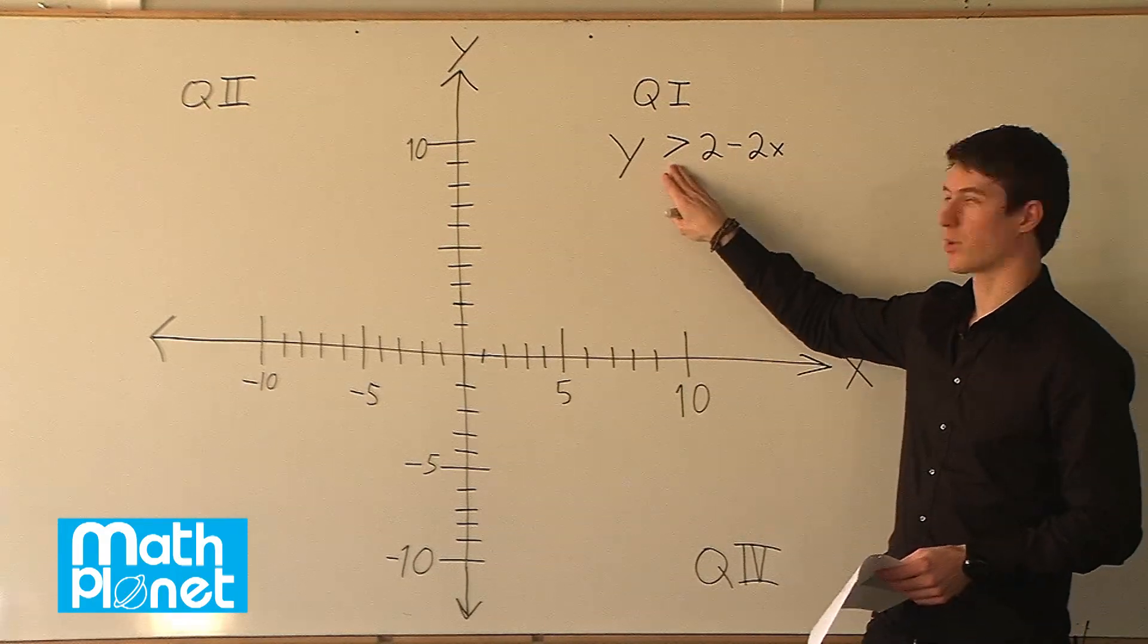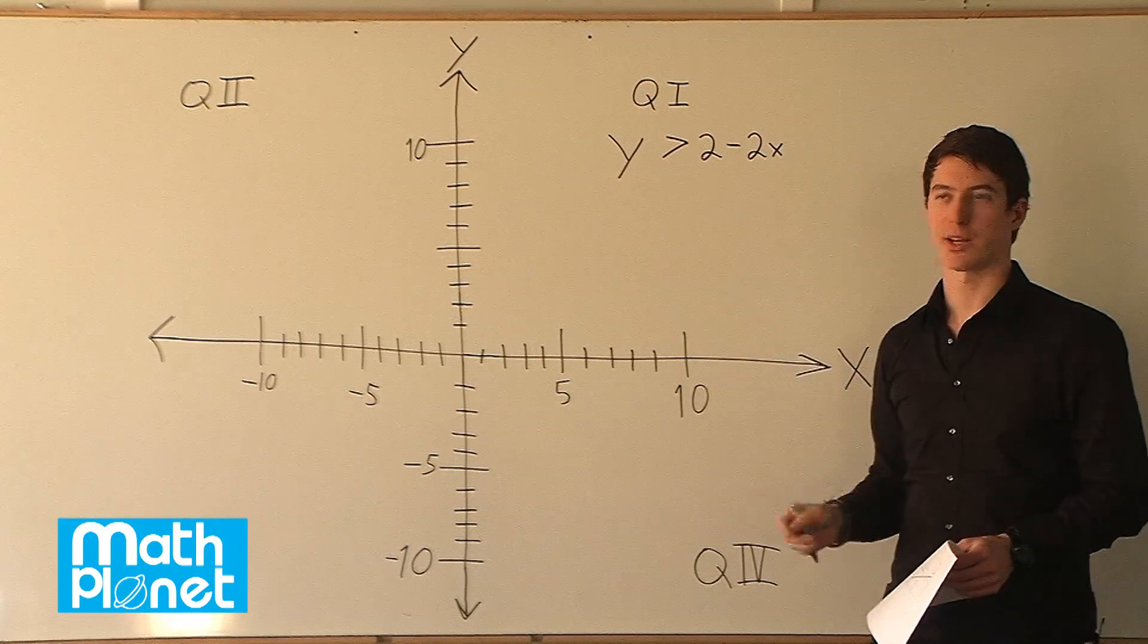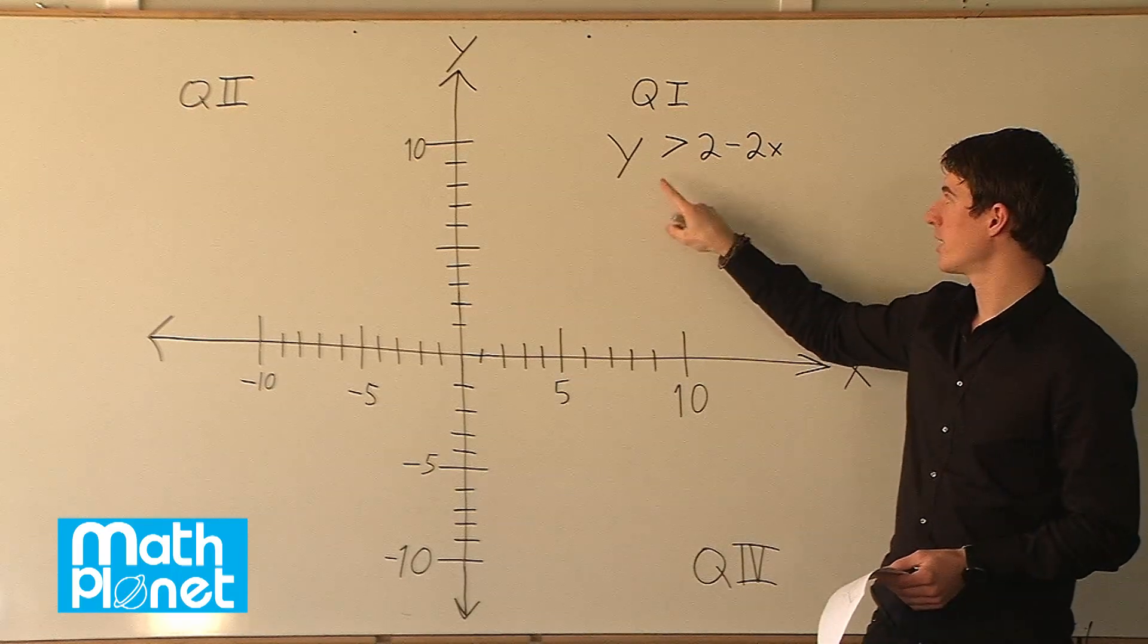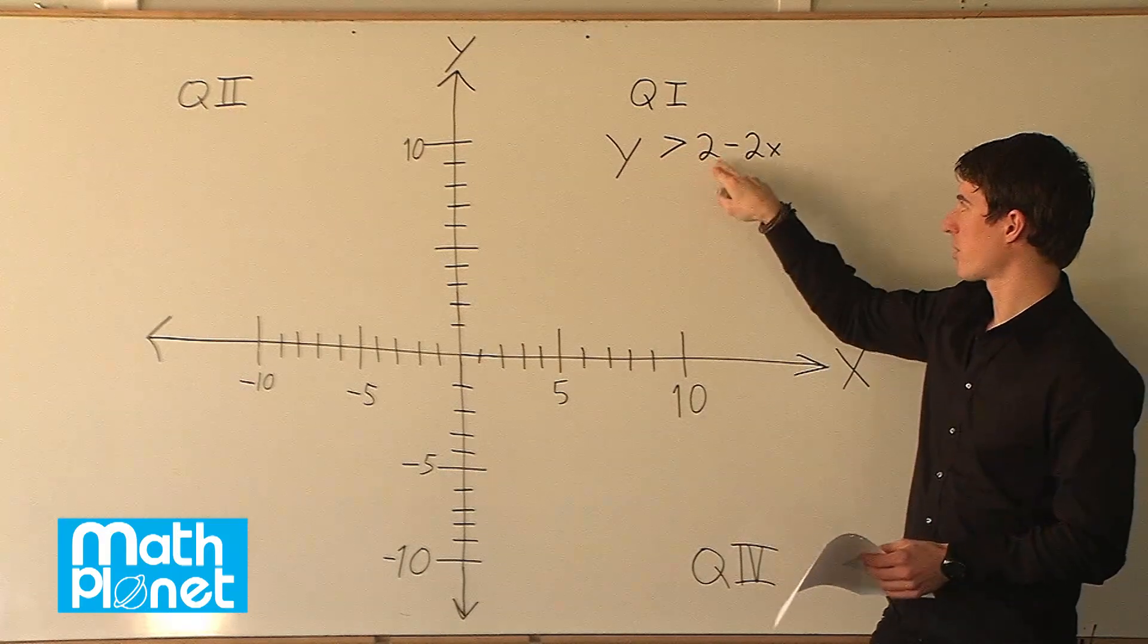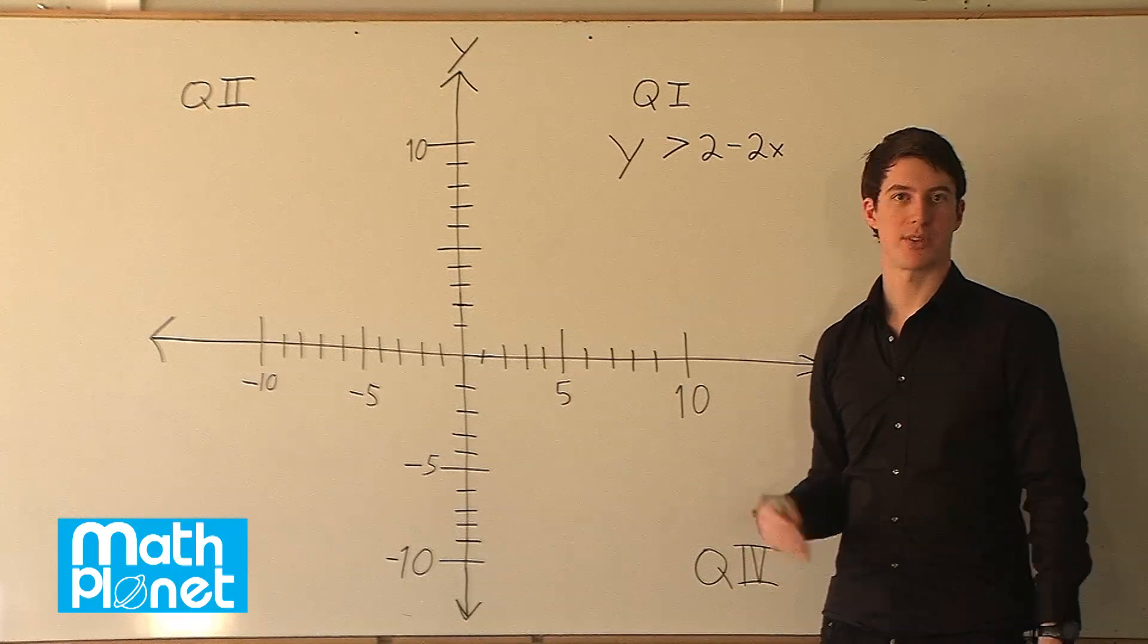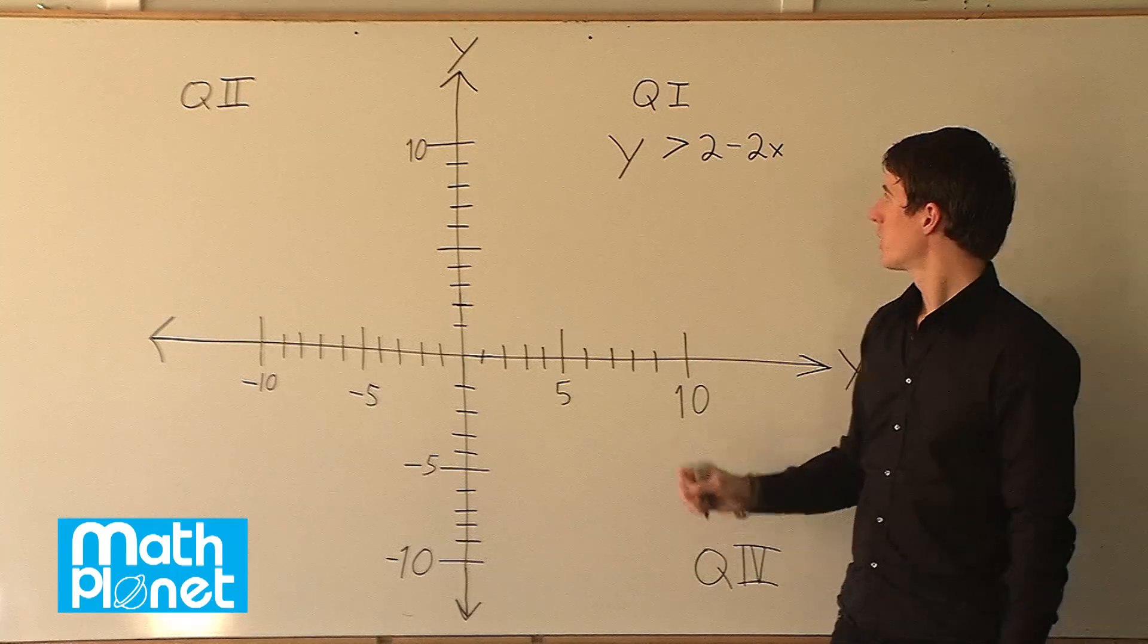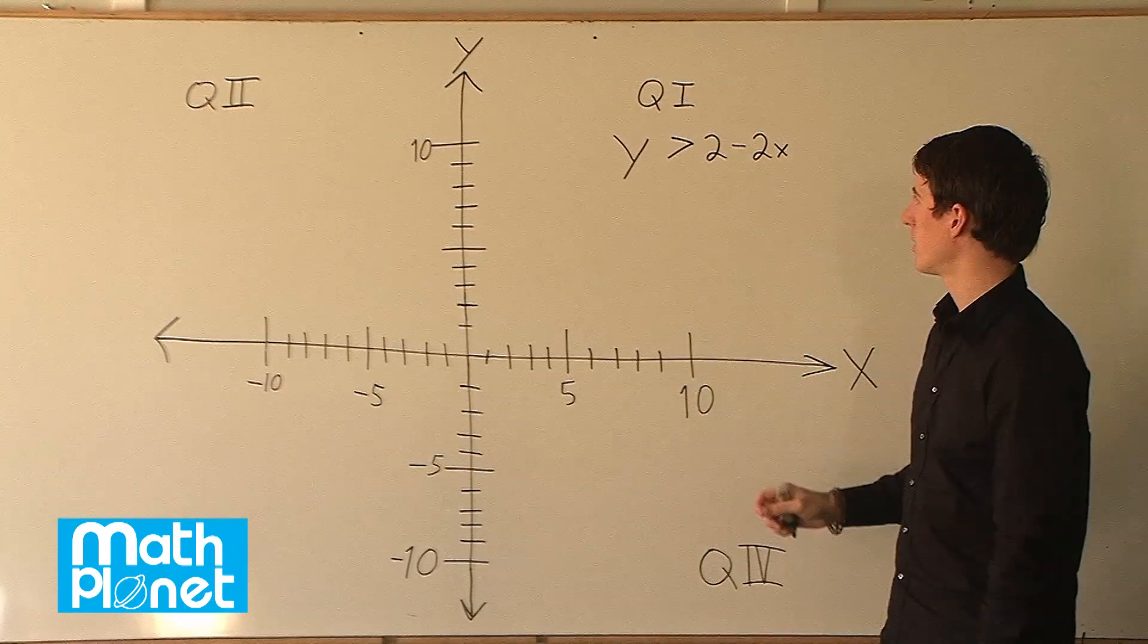If we think about this greater than symbol being just like an equal sign, we can see this is in slope-intercept form already. We have y equals, written backwards, b minus 2x. So this is our b or y-intercept at 2, and negative 2 is our slope. We can graph this just like we've graphed other things, but then worry about what this inequality means.